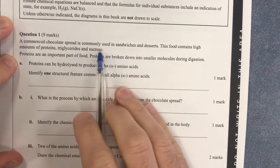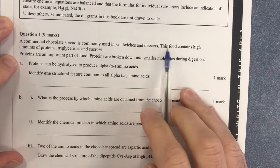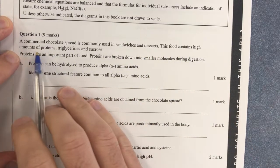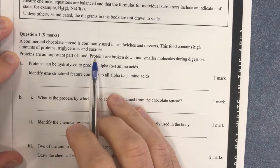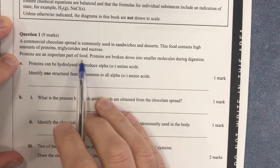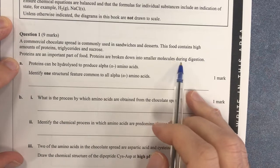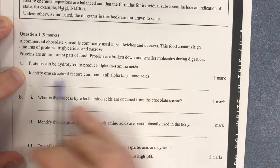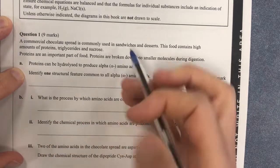A commercial chocolate spread is commonly used in sandwiches and desserts, good old Nutella. This food is high in the amount of proteins, triglycerides and sucrose. Proteins are an important part of the body. Proteins are broken down into smaller molecules through digestion. Proteins can be hydrolyzed to produce alpha amino acids.